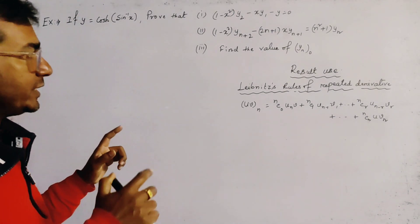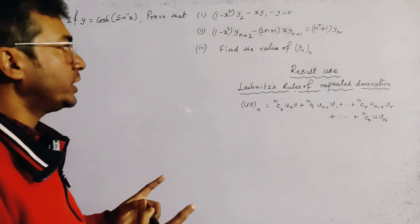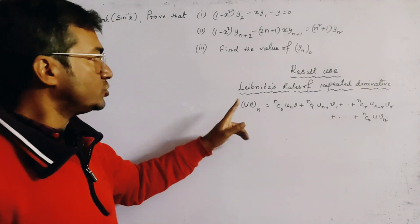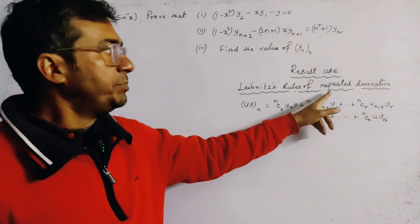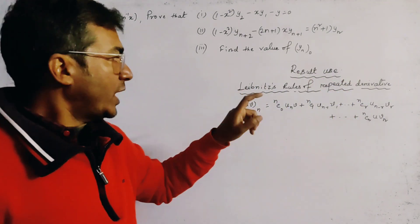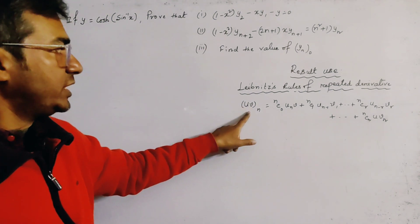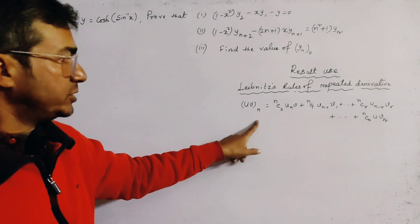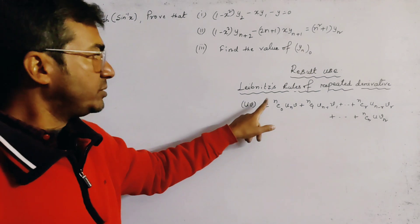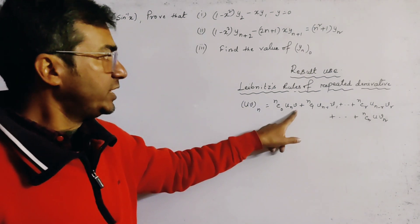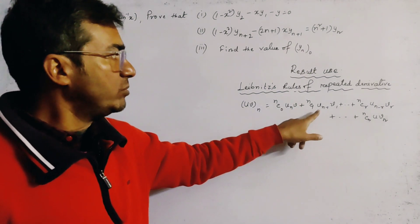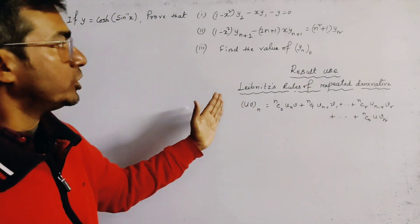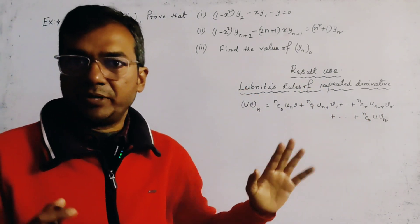We use an important theorem known as the Leibniz rule of repeated derivatives. This gives (uv)ₙ — where suffix n means the nth derivative — which is given by nC₀·uₙ·v plus nC₁·uₙ₋₁·v₁, and so on. We use this important rule of successive differentiation.